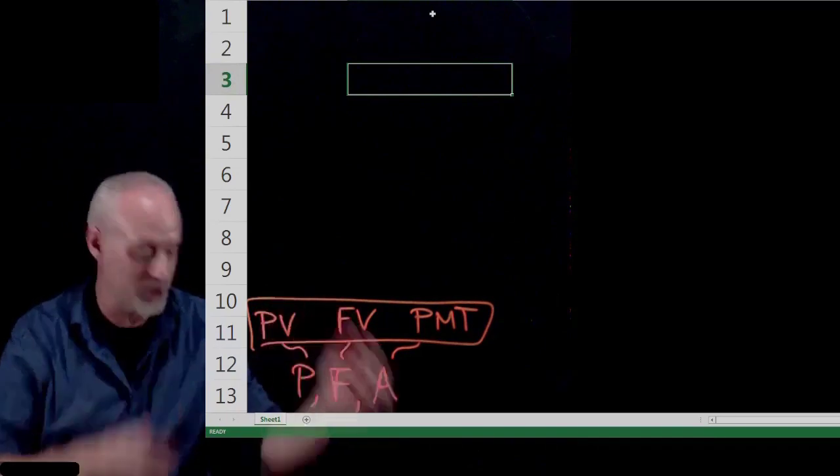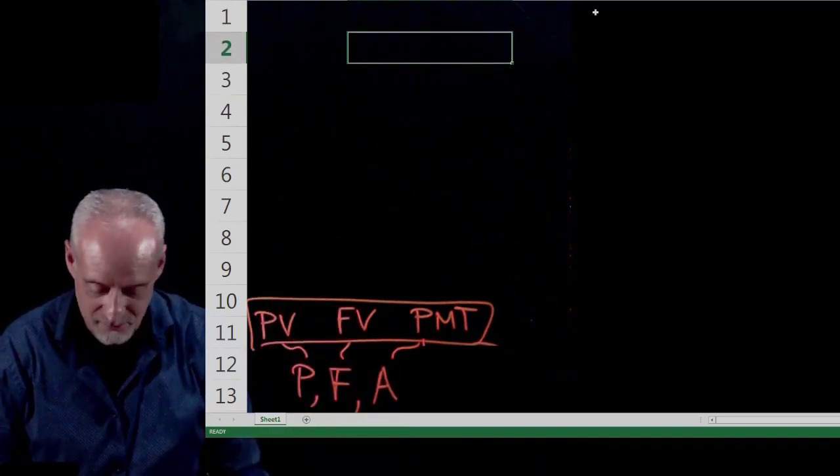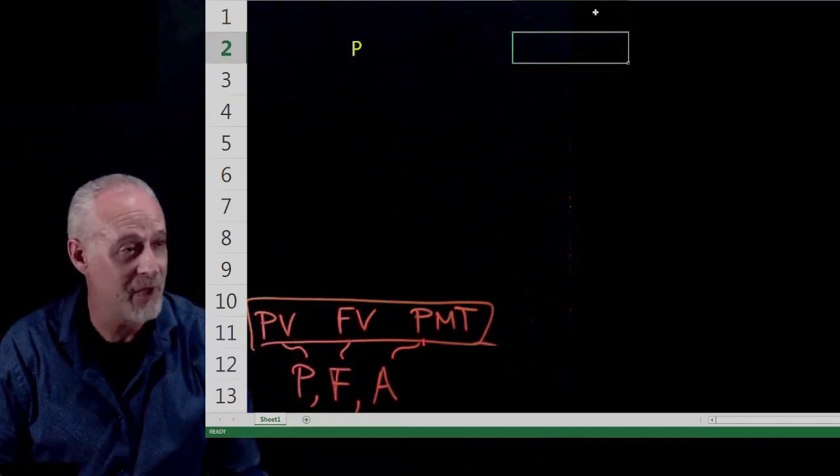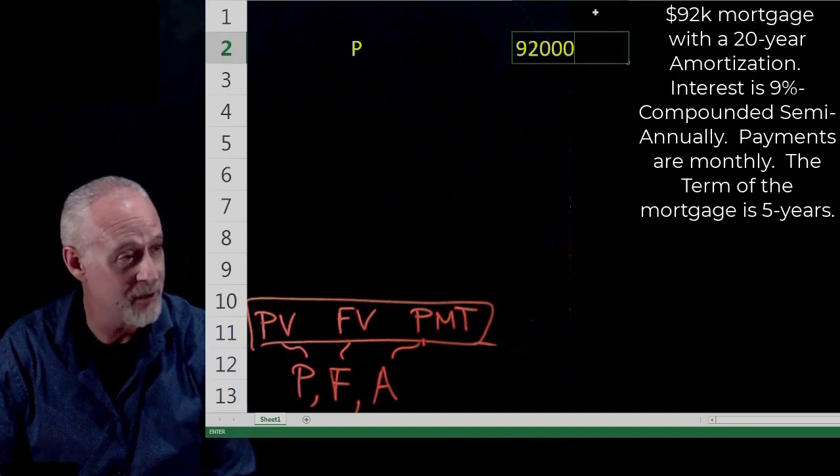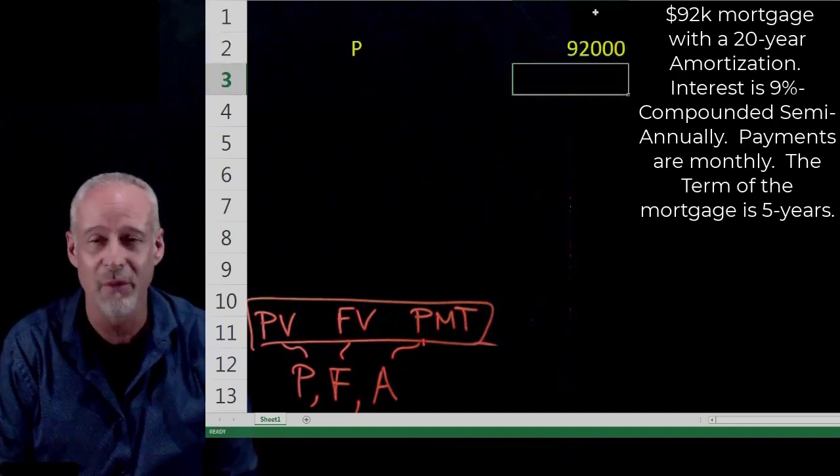P is just PV for present value. F is FV for future value, and A is PMT for payment. So in the Excel world of calculations, these are built-in functions. To access them, you just start typing in a cell with a plus sign. Let's try right now. I'm going to do a value of P, and the value of P is $92,000. That was our mortgage.